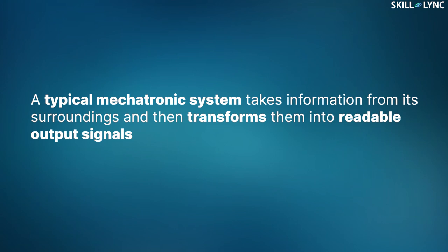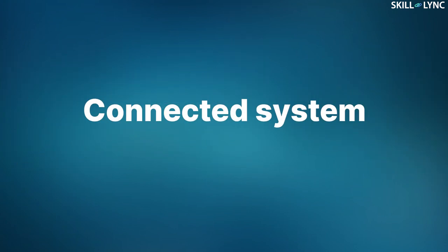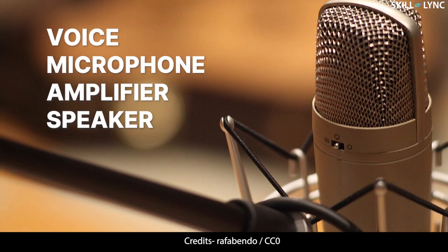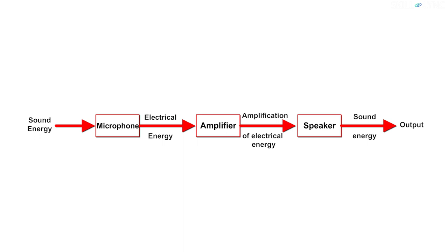Now let us discuss what a connected system is. Let us take the example of a microphone. Here the voice or sound energy is the input into the microphone. The microphone converts this sound energy into electrical energy, after which it goes to the amplifier. The amplifier then amplifies this input and the speaker gives us this amplified output in the form of sound. Flow of information is in one direction with the output of one block becoming the input to the next block. Such a system is called a connected system.